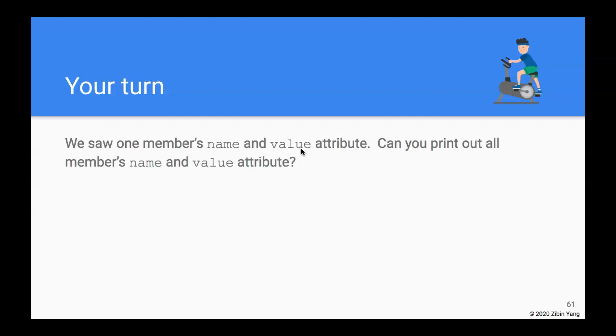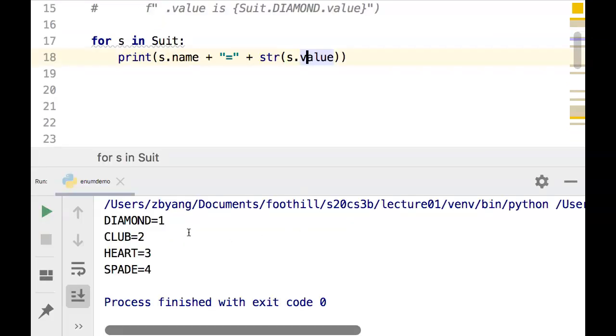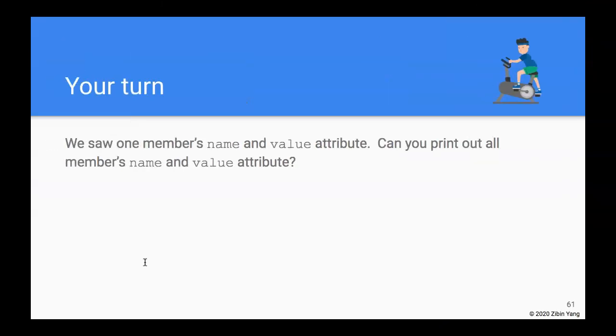Assuming you have taken the time to do this, this is how I would do it. It's just for each of the suit in the Suit enum, I'll just print out the .name and the .value. So when I run this, diamond equals 1, club equals 2, and so on.